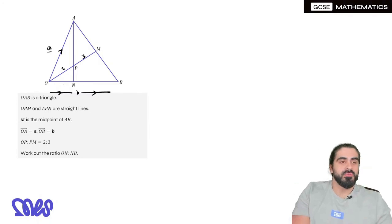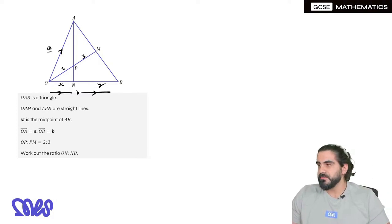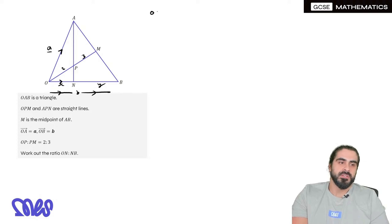So they want us to work out what this ratio is. There's a few ways we can do this. I'm going to show you the easiest way I think will help you guys understand. Now ON is some fraction of the full line. I'm going to say it's X slots of the vector B, where X could be a third, it could be a quarter. I don't know.